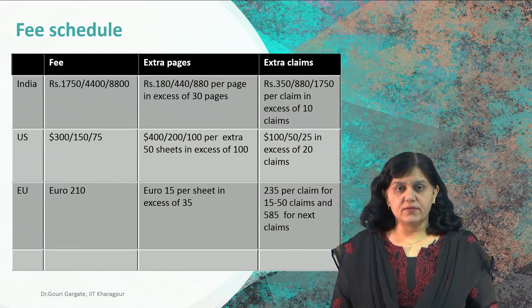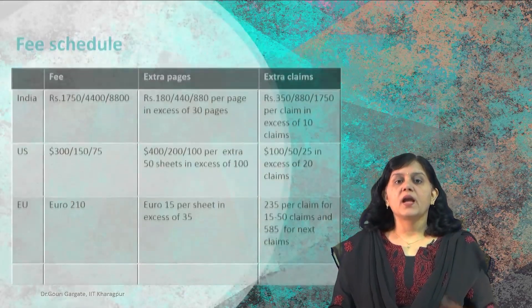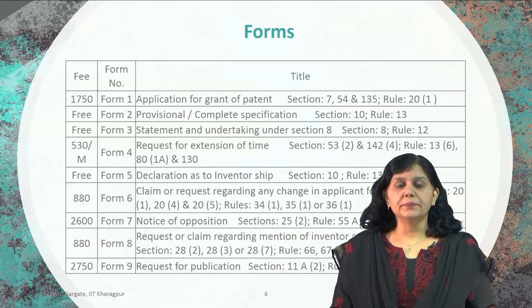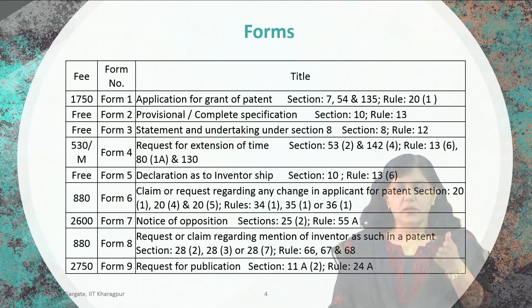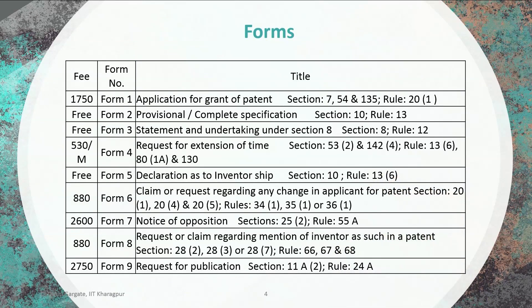Now, what about the forms? We will see the forms. If you see the forms, there is a form number, a title, and the relevant fee. Form number 1 is for application for grant of a patent.